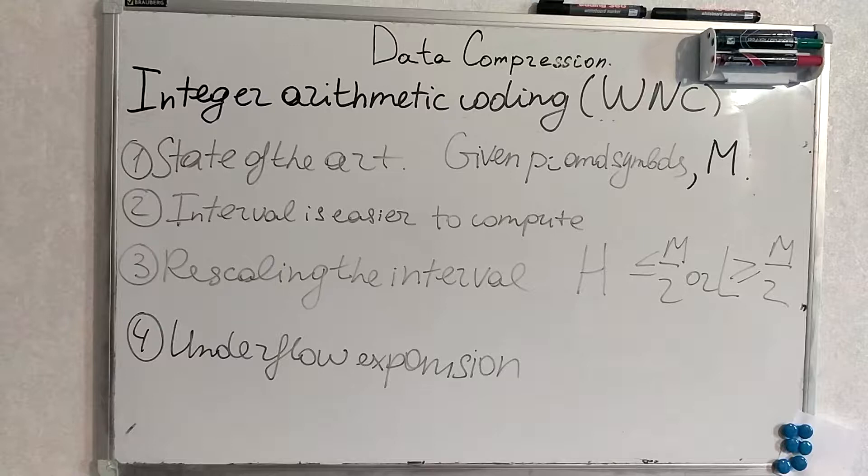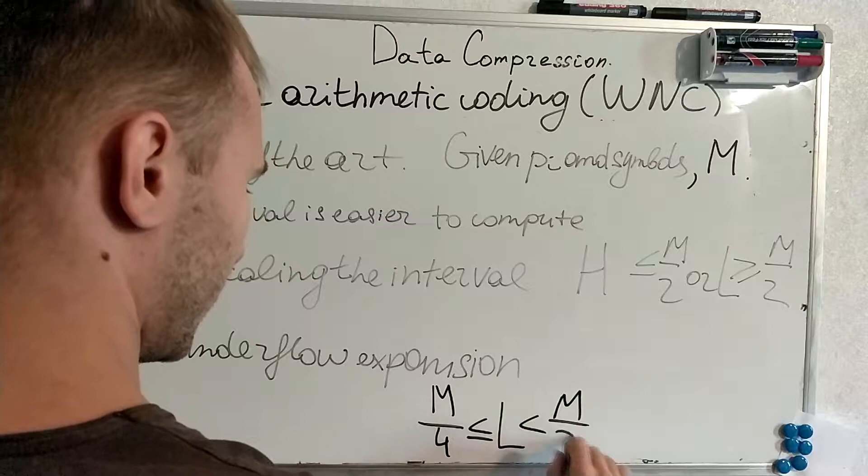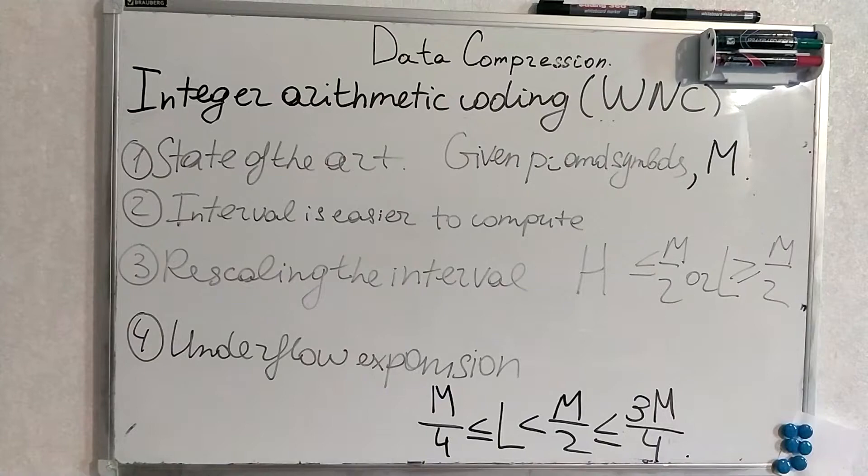And the condition for the underflow expansion is this big condition. This is m divided by 4, is smaller or equal than m, greatly smaller than m. And this is the condition for underflow expansion.